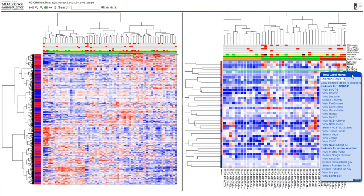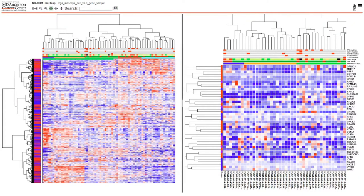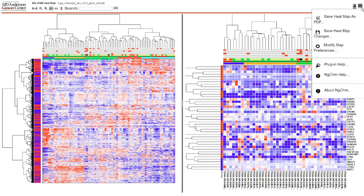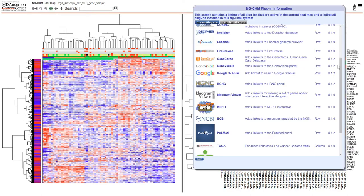The available menu entries also depend on the link out plugins included in the NGCHM viewer. You can display the plugins included in your viewer by selecting the hamburger menu at the top and then selecting 'Plugin Help.' At the top of that menu, select 'Installed Plugins.'